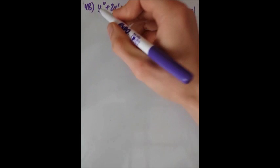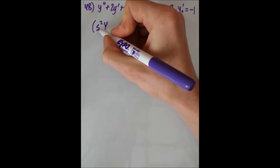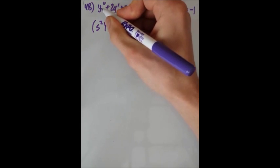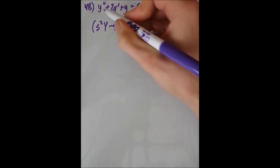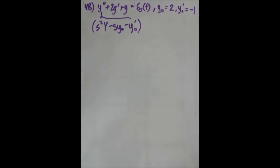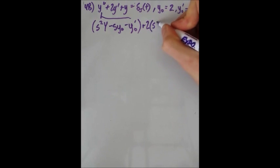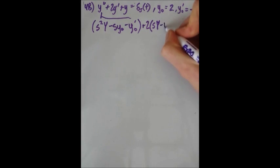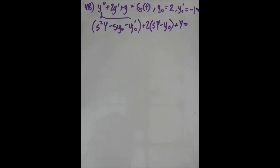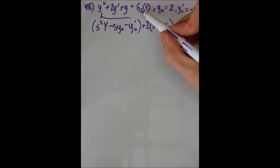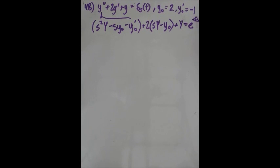For y double prime, using s as the transform variable and uppercase Y as the transformed solution, you'll find this in a table or eventually have it memorized — that's what y'' becomes. Plus 2y' — we also have a formula for that — becomes 2 times s times uppercase Y minus our initial value for y. The plain y just becomes uppercase Y, and the Dirac delta transforms to e to the negative 5s.